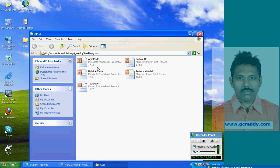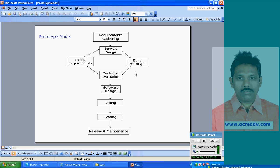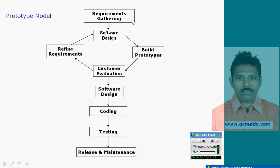Model overview: first, requirements gathering, then software design. After design, building prototypes — screens with no functionalities. Building prototypes is easy. Writing code for functionality is a more difficult, time-taking process, but building only screenshots with no functionalities is very easy.